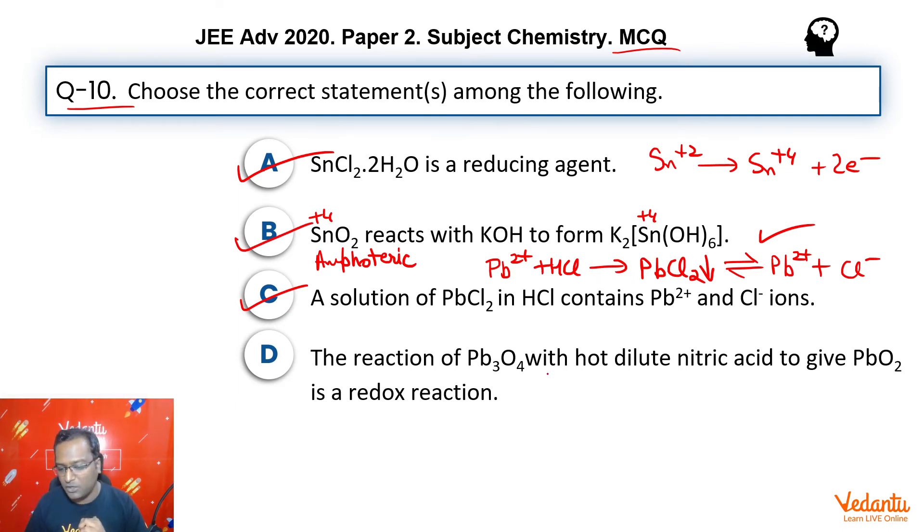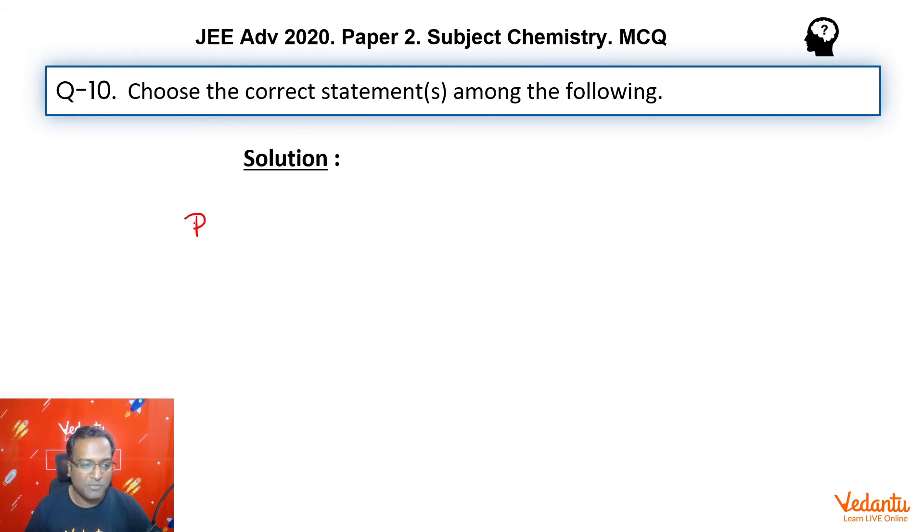Next, the reaction of Pb3O4 with hot dilute nitric acid to give PbO2 is a redox reaction. Let me take this on the next page. So when we talk about Pb3O4, guys, it is essentially a mixed oxide where we have PbO2 and 2 times PbO. That is +2 as well as +4 oxidation state.